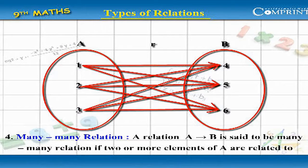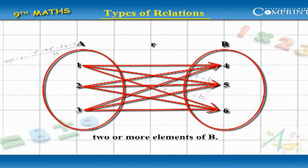Many-Many Relation: A relation from A to B is said to be a Many-Many relation if two or more elements of A are related to two or more elements of B.